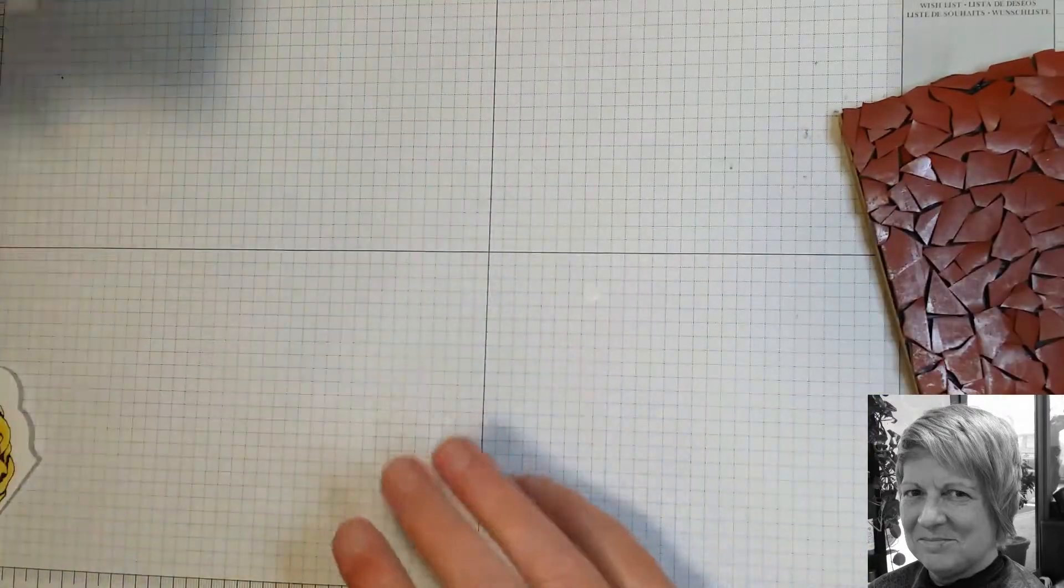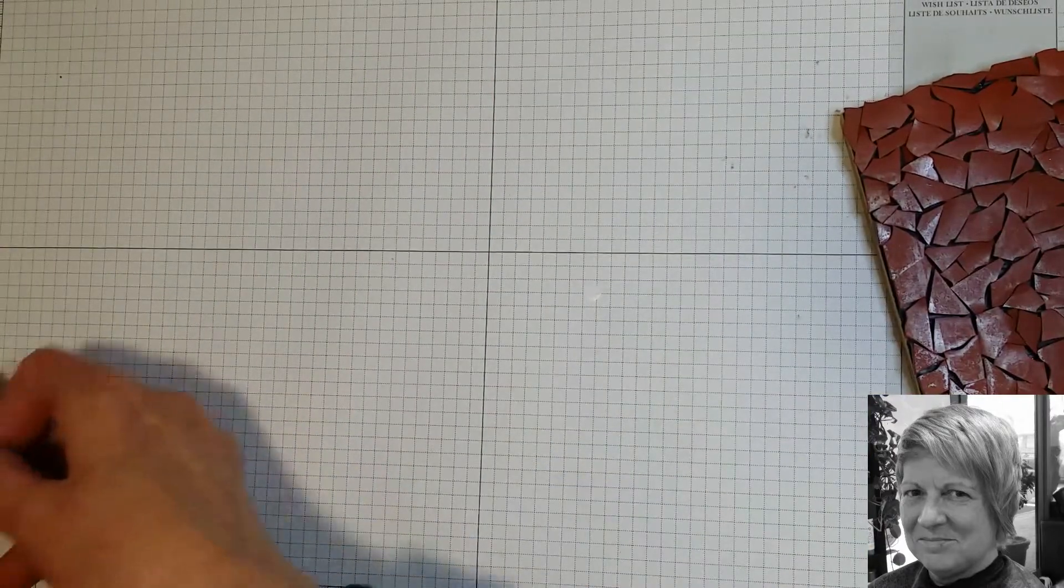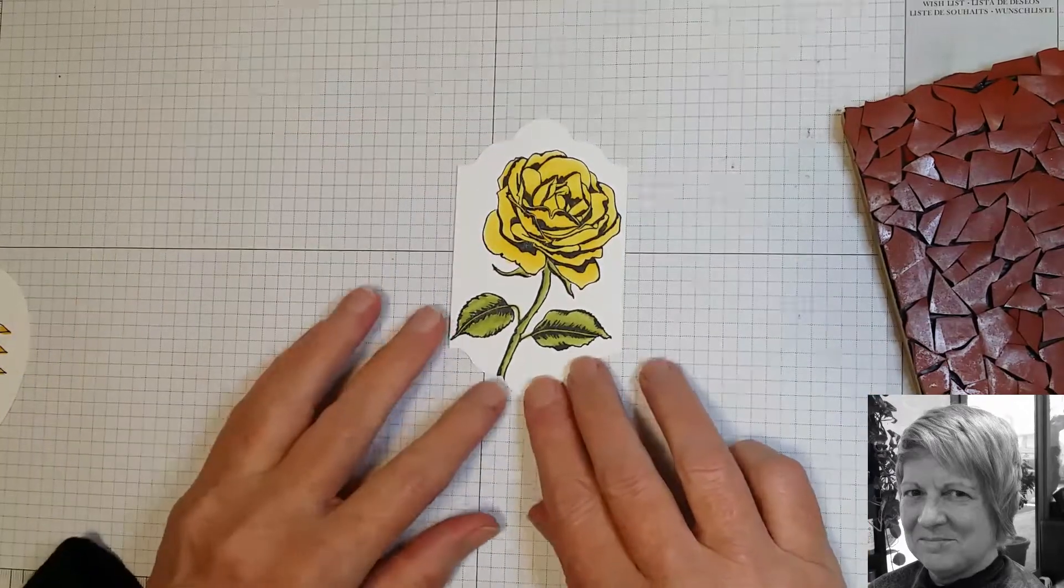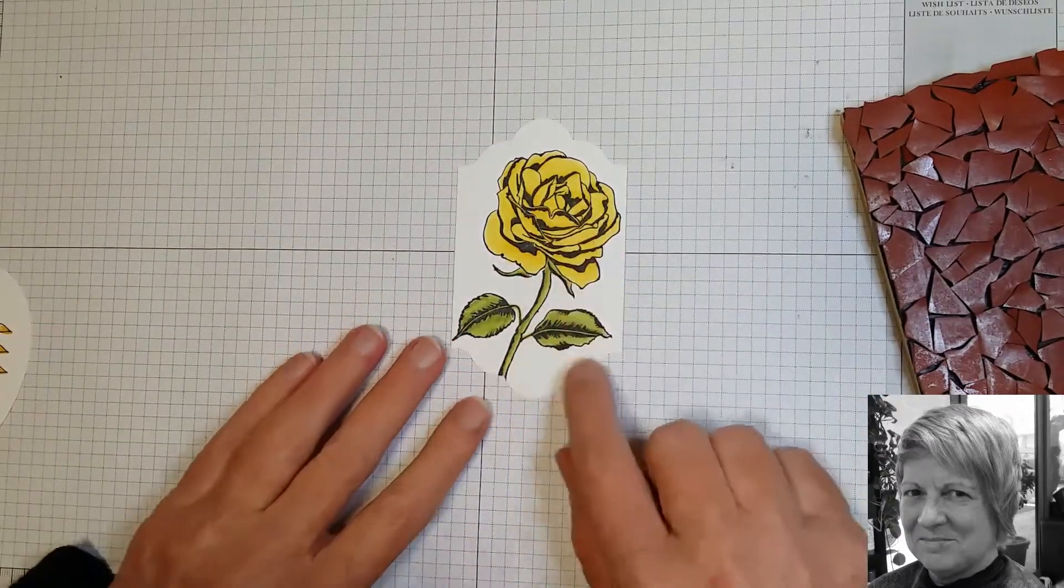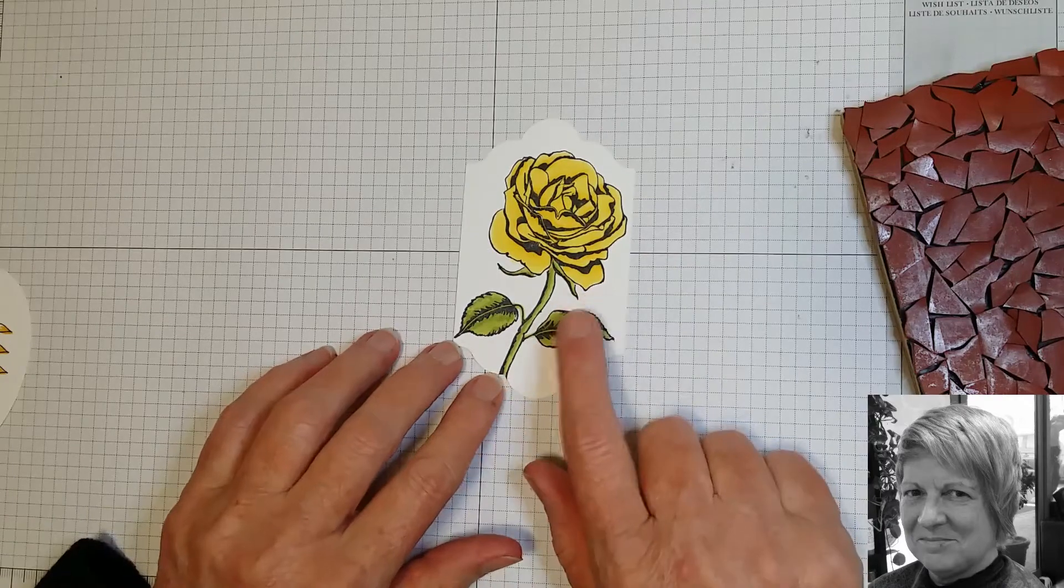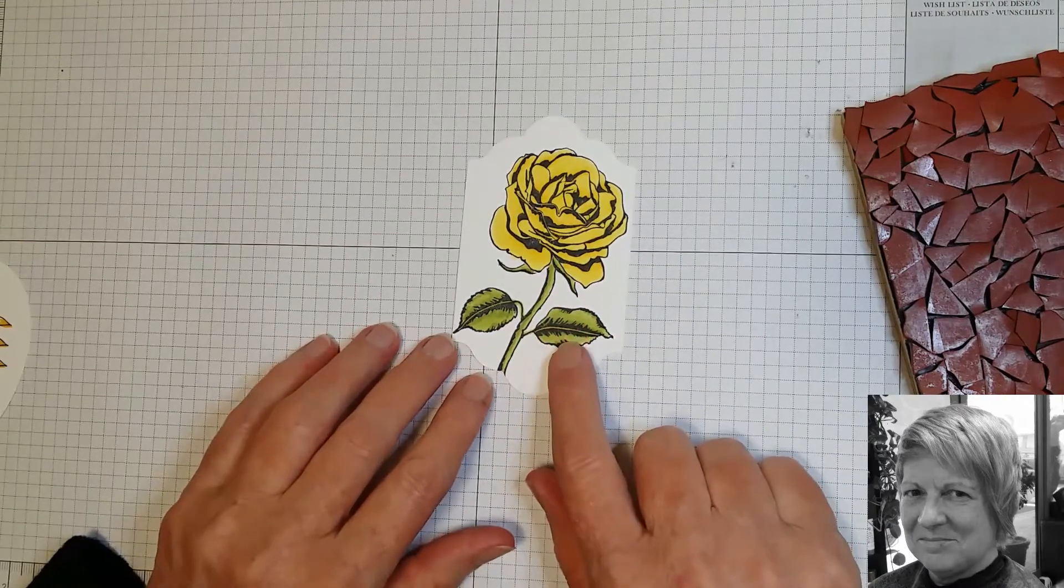I have stamped another one of the Graceful Garden roses, and this time I've colored it in Daffodil Delight and Old Olive alcohol markers.